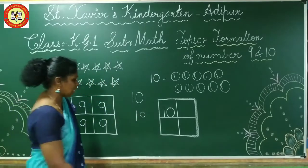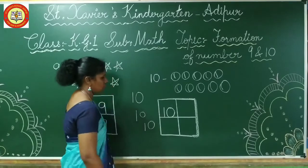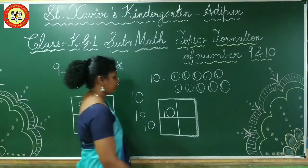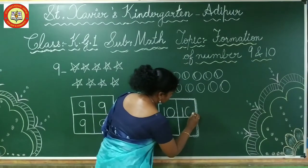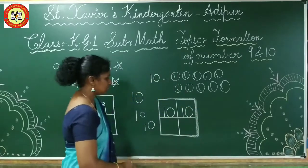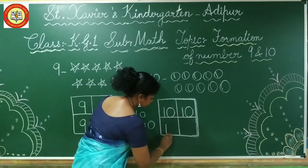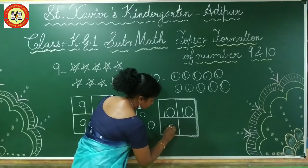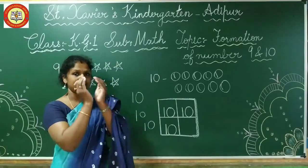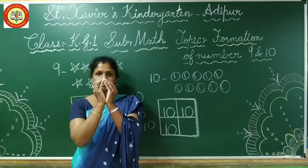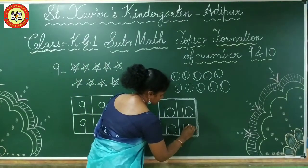You are looking at number 10. The curve we want to make — like this. Let's try again. This is number 10. One, zero — ten.